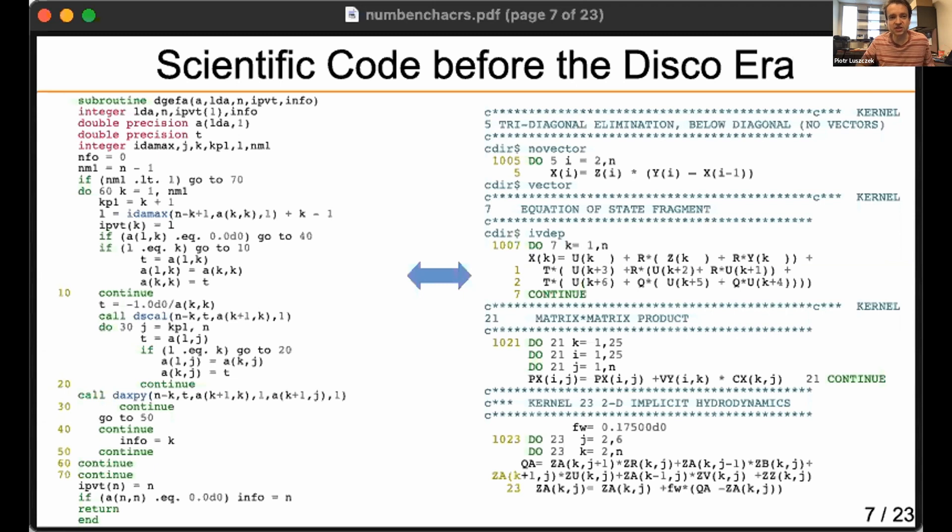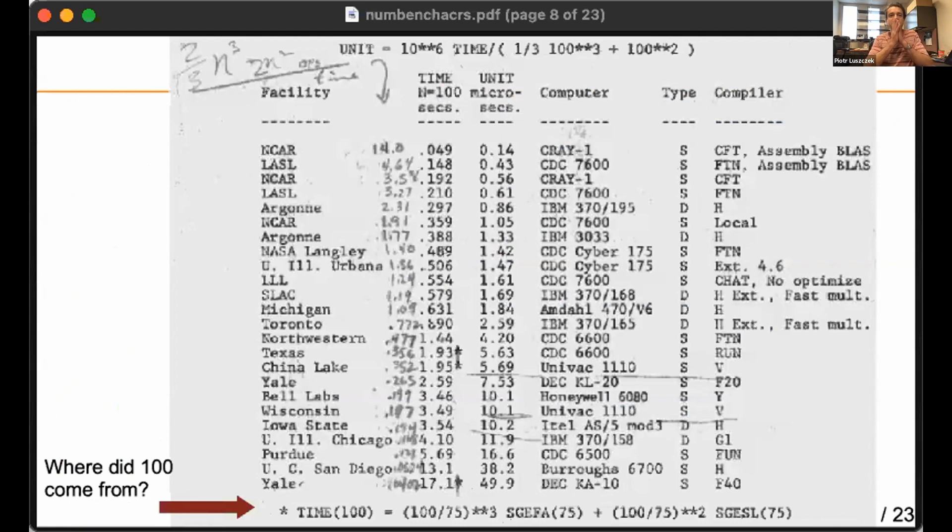Risking copyright infringement, I'm going to steal Jack's famous picture that shows the first LINPACK report, where Jack reported performance numbers of a few computers of the era. I'd like to focus on this 100 number that was used for the first test of the LINPACK benchmark.